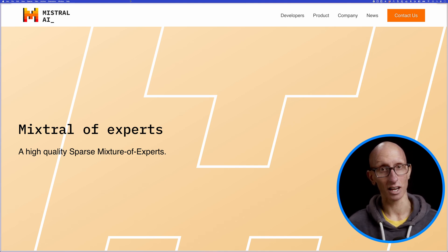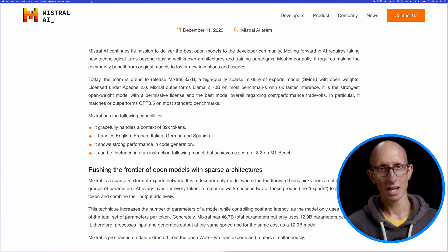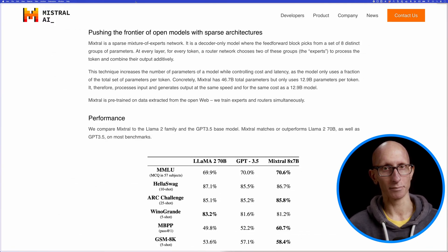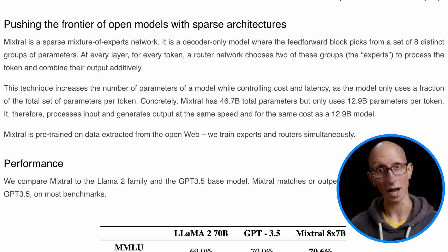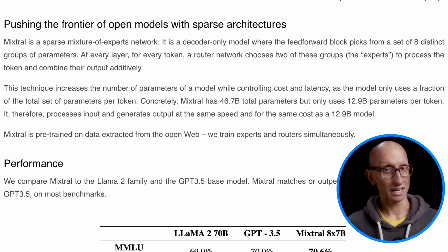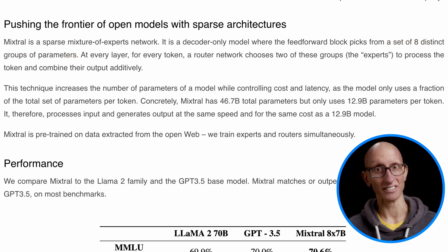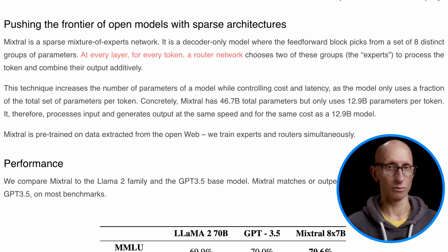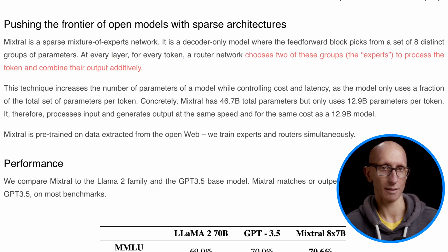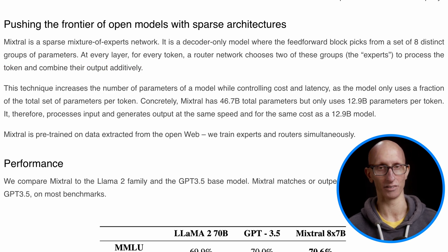Mixtral is the latest large language model released by Mistral AI. It's a mixture of experts model, which means that rather than having only one model to answer questions, we have many. In Mixtral's case there are eight of these models, and then there's a router that sits at the front. When you ask a question, the router will pick two of the models to attempt to answer your question before sending back a response.